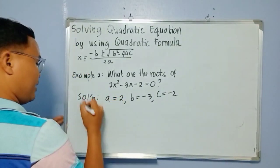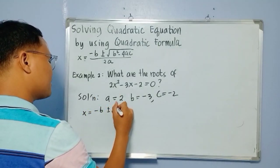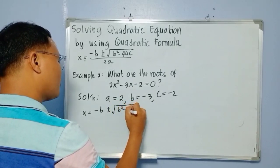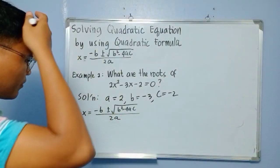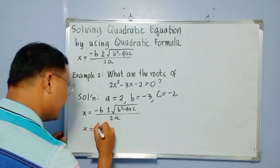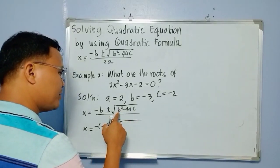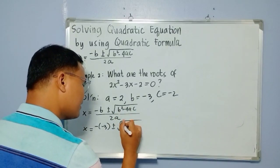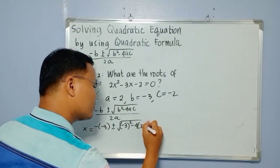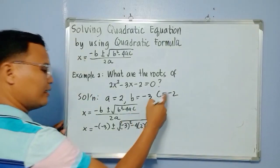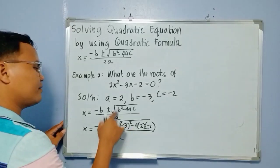Write the formula: x equals negative b plus and minus the square root of b squared minus 4ac, all over 2a. Then substitute: x equals negative of negative 3, plus and minus the square root of negative 3 squared, minus 4 times 2 times negative 2, all over 2 times 2.